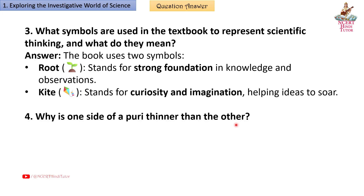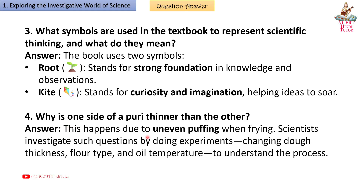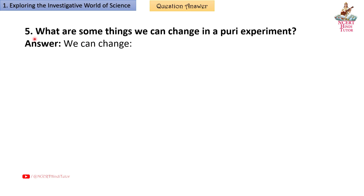Question 4: Why is one side of a puri thinner than the other? Answer: This happens due to uneven puffing when frying. Scientists investigate such questions by doing experiments, changing dough thickness, flour type, and oil temperature to understand the process.